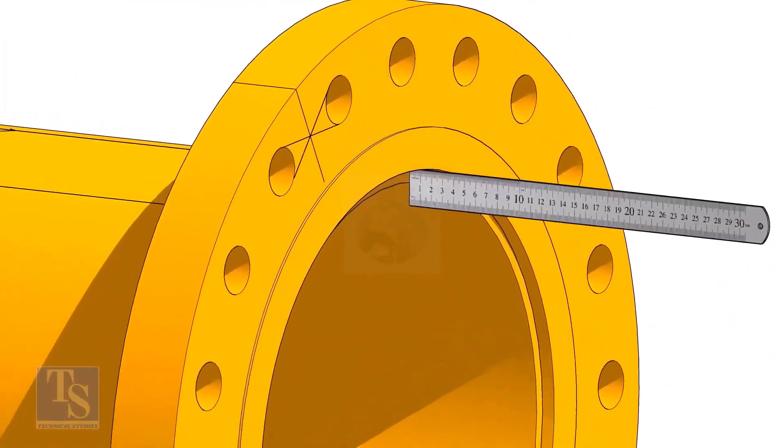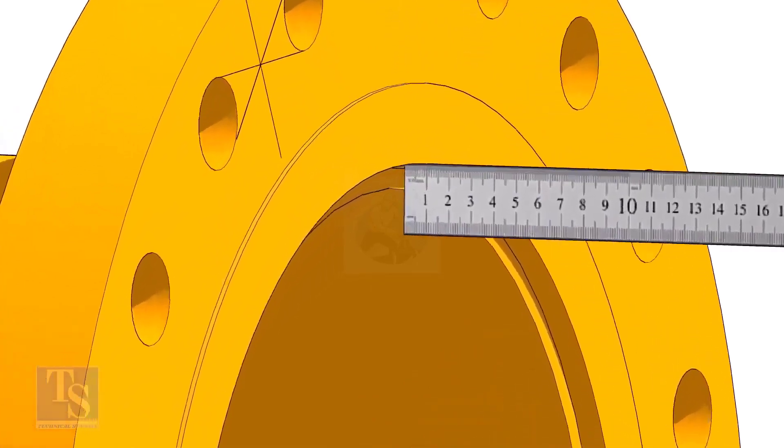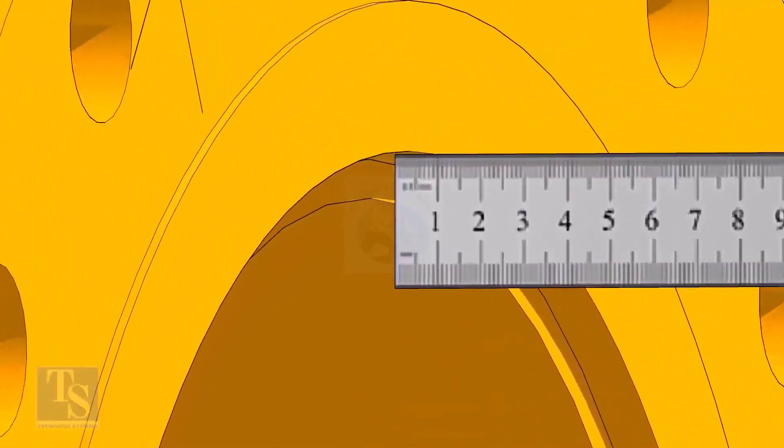Fix the distance between the flange face and the pipe face, usually, this measurement is equal to the thickness of the pipe.